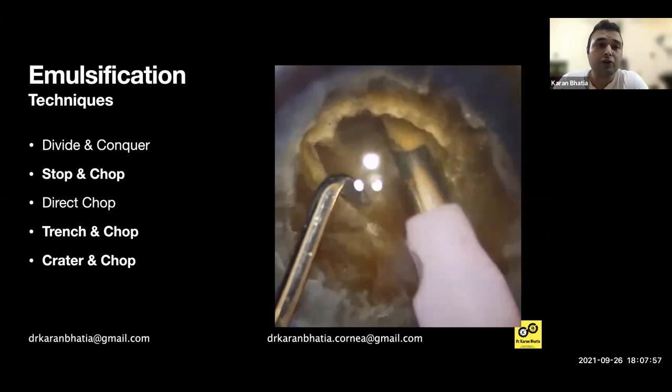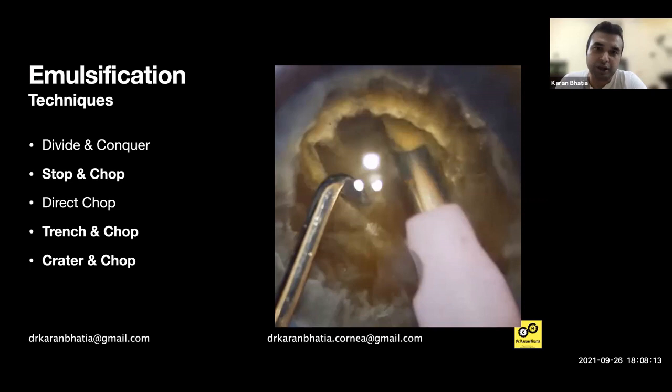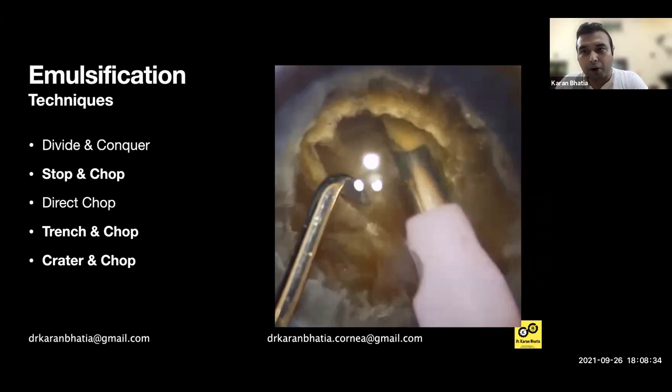My preferred technique is stop and chop. I don't do divide and conquer, but for beginner surgeons who are starting, it's not a bad way — you can do divide and conquer as well. If you are starting off with brown or hard cataracts, don't do direct chop in the initial cases. Do stop and chop first; that is better. Once you're comfortable with stop and chop in routine NS2-3 cases, then you can probably attempt direct chop.